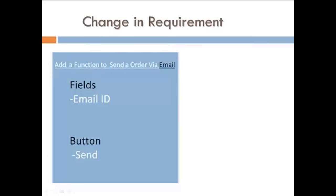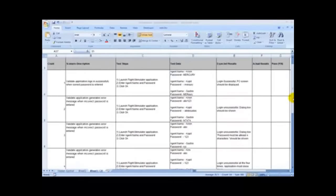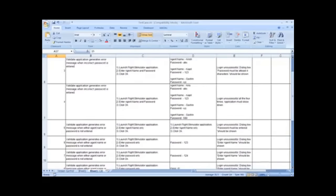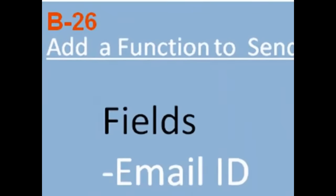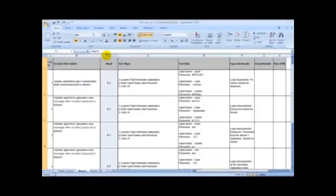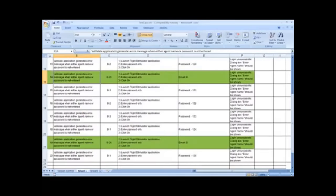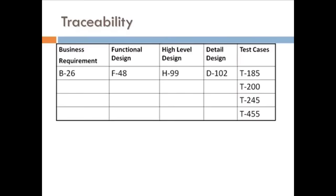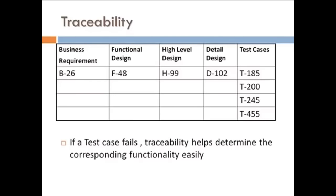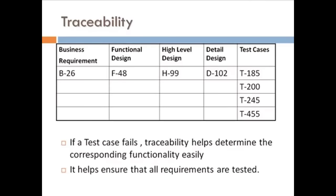Consider a scenario where the client changes the requirement and adds a field — recipient name — to the functionality. Now your test case suite is very large, and it is very difficult to trace the test cases affected by the change. Instead, if the requirements were numbered and referenced in the test case suite, it would be very easy to track the test cases that are affected. This is nothing but traceability. The traceability matrix links a business requirement to its corresponding functional requirement, right up to the corresponding test cases. If a test case fails, traceability helps determine the corresponding functionality easily. It also helps ensure that all requirements are tested.